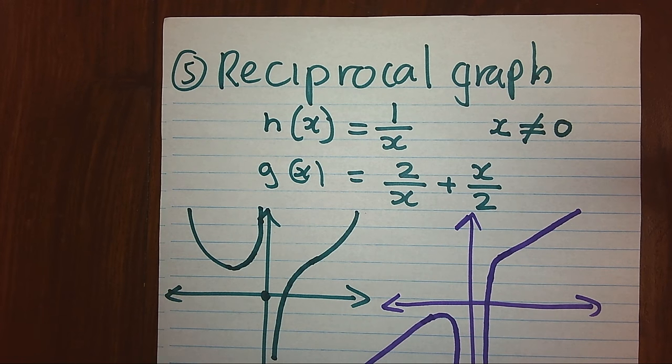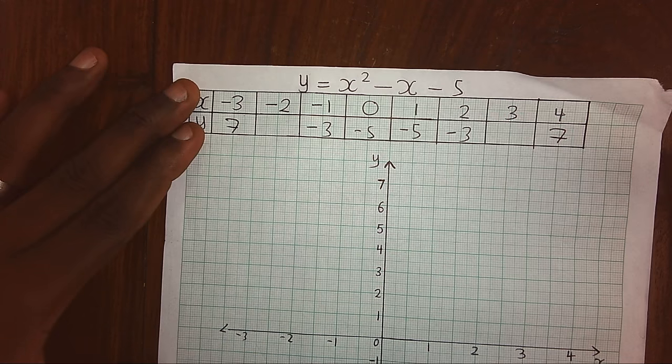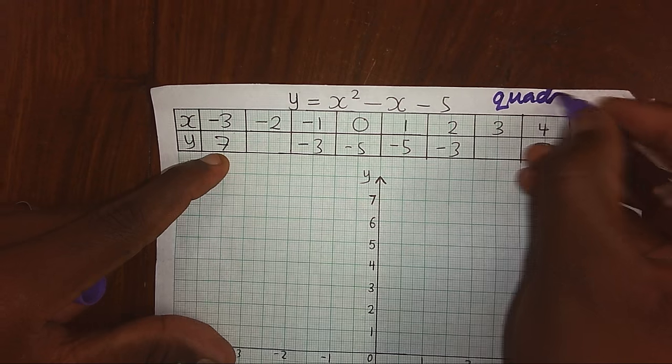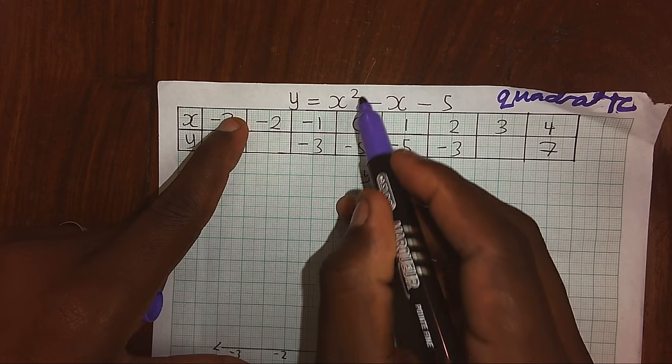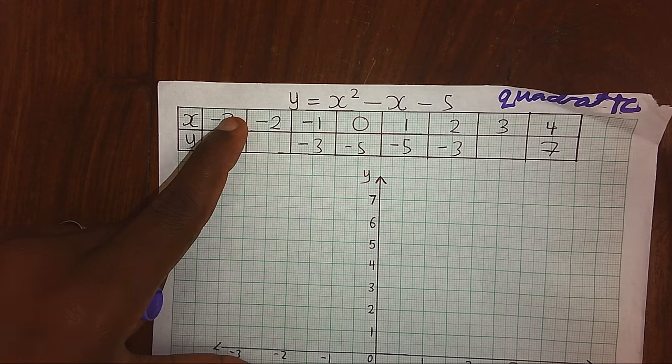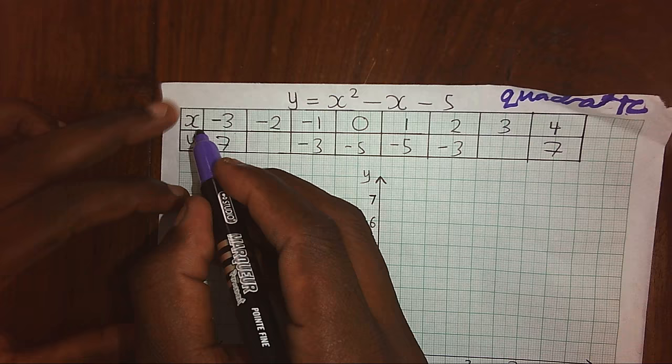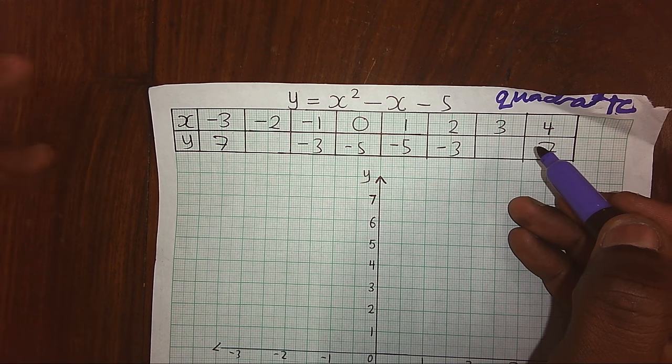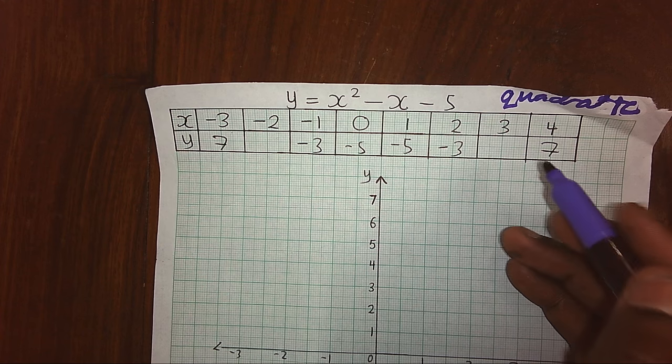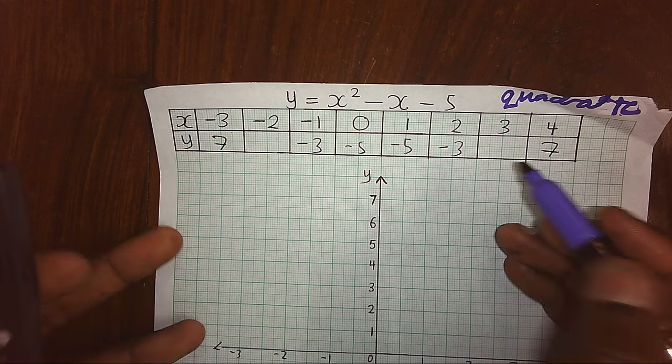Now, how do we draw a graph? Let's have a look at this example. When we look quickly, the example you are seeing here is a quadratic. Why quadratic? Because we have x squared minus x minus 5. We are always given a table of values according to our level of coverage. Some values may be given, or all the values of the table might not be given.